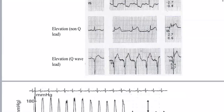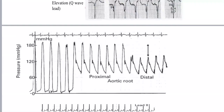This is a pullback invasive hemodynamic tracing. What do you think about the first one on the top? There is a gradient between the LV and the aorta — proximal and distal. Most likely this is coarctation. So this is a pullback from the LV to proximal aorta to distal aorta, and there is a gradient between the distal and proximal aorta — this is coarctation.